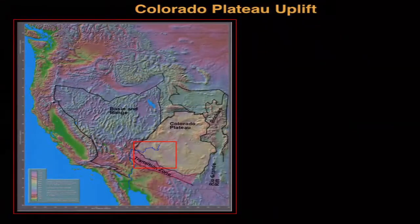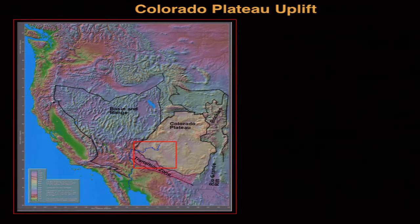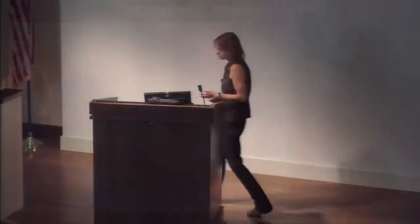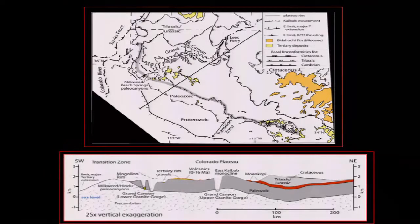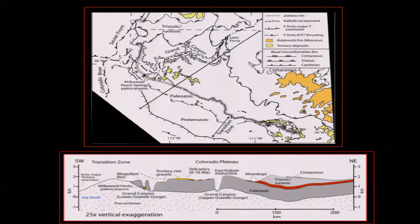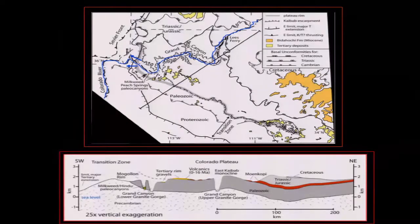I'm going to spend a few minutes setting up the geology of the southwestern portion of the plateau and talk about the constraints we have on the timing of uplift and unroofing, and then some of the thermochronology constraints on the regional unroofing history. Most of the evidence for when the Colorado Plateau became elevated is based on observations in the southwestern portion here, where we have the Grand Canyon. The Colorado River currently flows westward through this region to its current exit at Grand Wash Cliff, and here is the Grand Canyon, which in places is up to a mile deep.